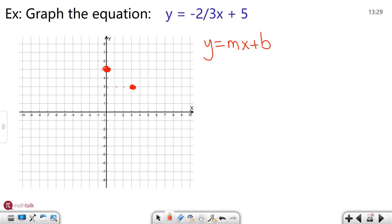Again I like to draw a third point just because you don't have to but I do it. 1, 2, 1, 2, 3. And then I can go ahead and draw a line through those. This is the graph of the equation y equals negative 2 thirds x plus 5.